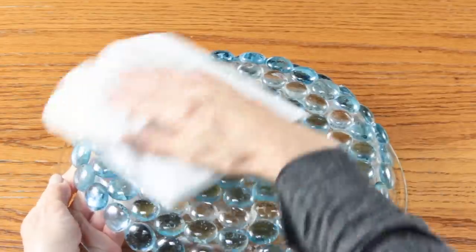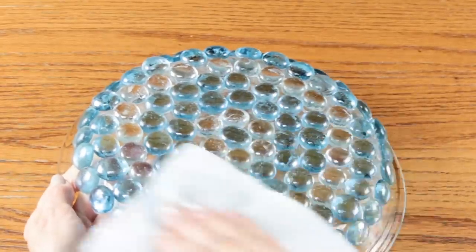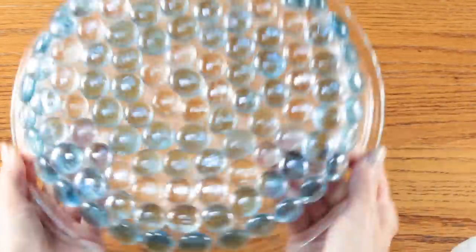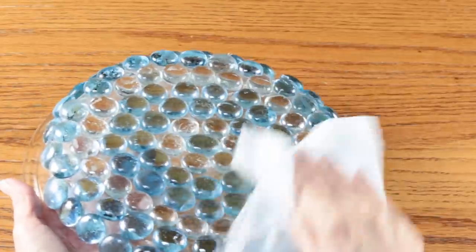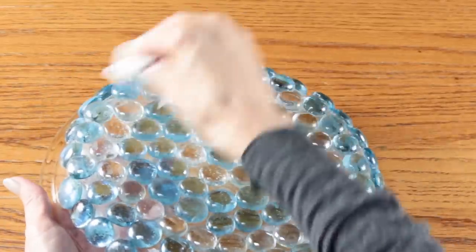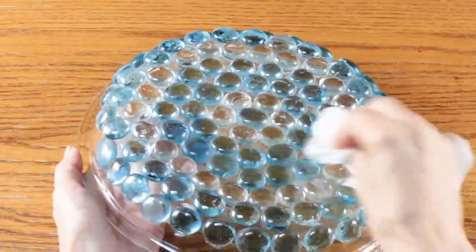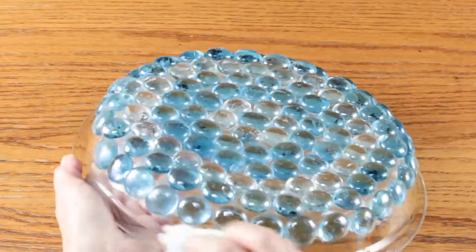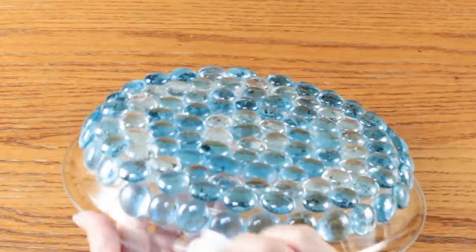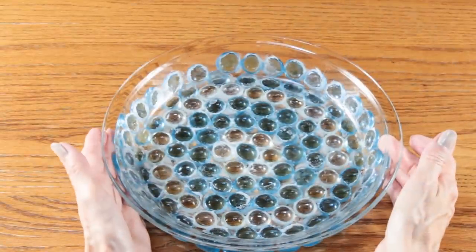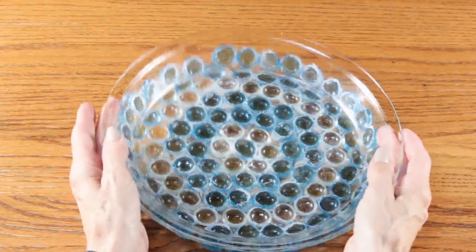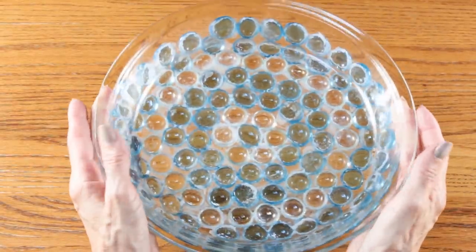I used a damp paper towel and I just wiped off the bottom and the sides to remove any little residue that might have been left over from the glue. After the glue dried, it did leave kind of a white haze between the beads. It actually looks like I grouted the bottom. And I really liked the way that it turned out.